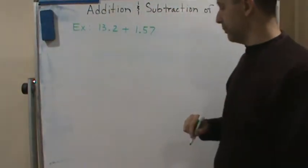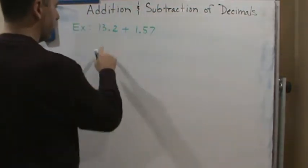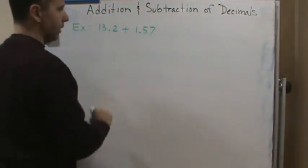Okay, so welcome back. Here's another example. So again, they're doing 13.2 plus 1.57.